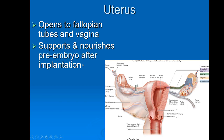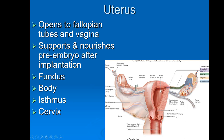The uterus opens to the fallopian tubes and also to the vagina. It supports and nourishes the pre-embryo after implantation. Anatomically, the regions of the uterus are the fundus — the big round top region — the body, which is the main part, the isthmus, which is a constricted region, and the cervix, which is the inferiormost part that opens into the vagina.